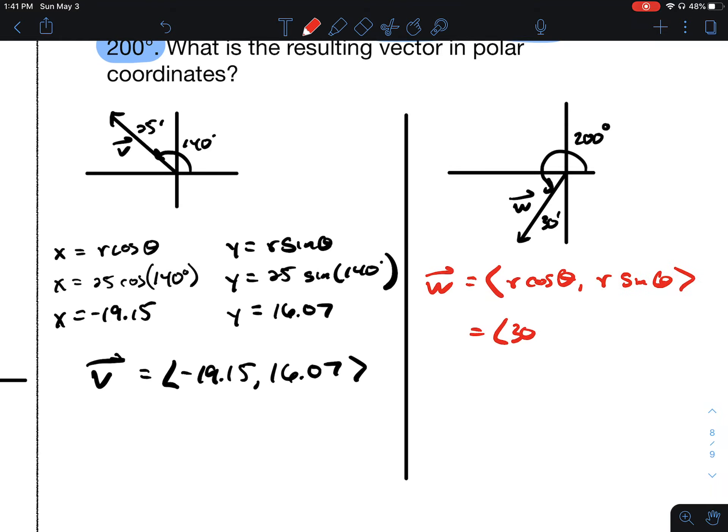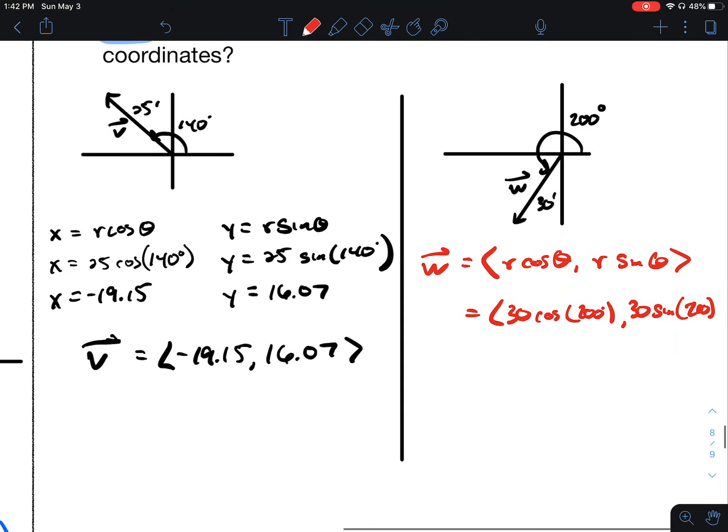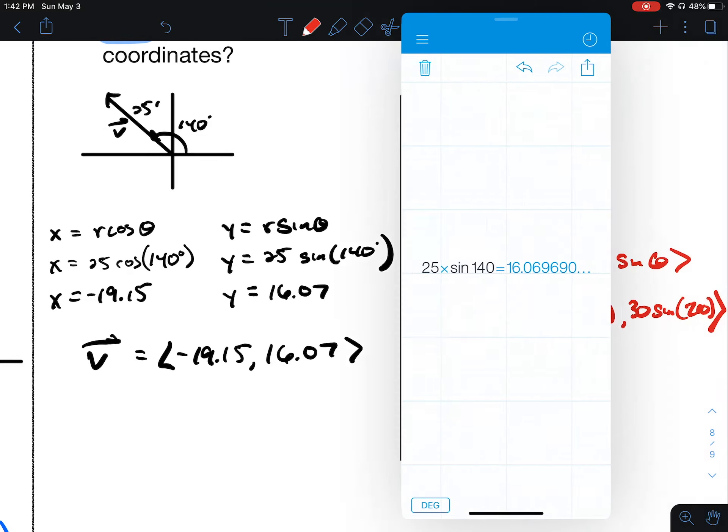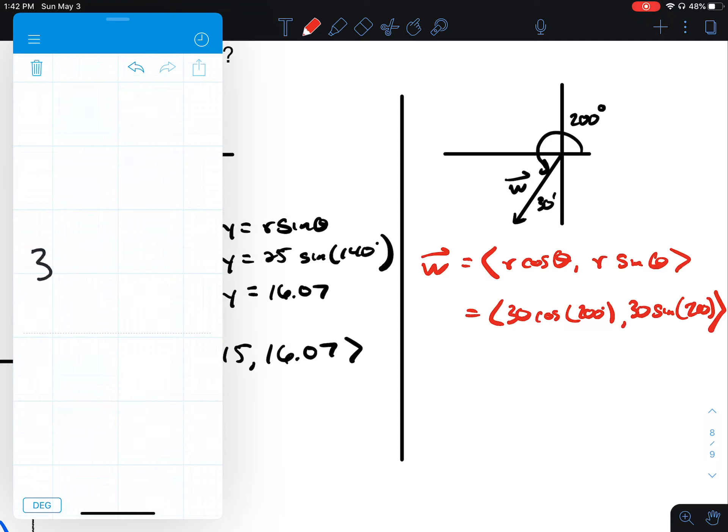The radius here is 30, theta is 200. Put this into my calculator. 30 cosine of 200 should be negative, that's negative 28.19. And 30 sine of 200 is negative 10.26. Both negative because we're going down and to the left.